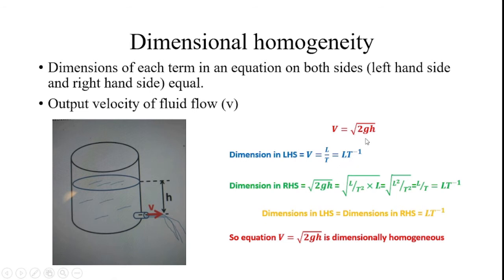Moving to the right-hand side: the square root of 2GH equals L divided by T squared, into L.